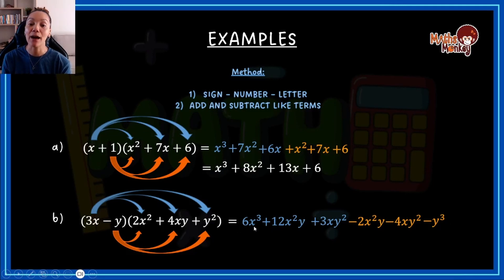And that gives me that. And now I look at what are the like terms. I've got x to the power of 3. There isn't any other. I've got y to the power of 3. There isn't any other. But these will be simplified. And these will be simplified because they have the same variables.